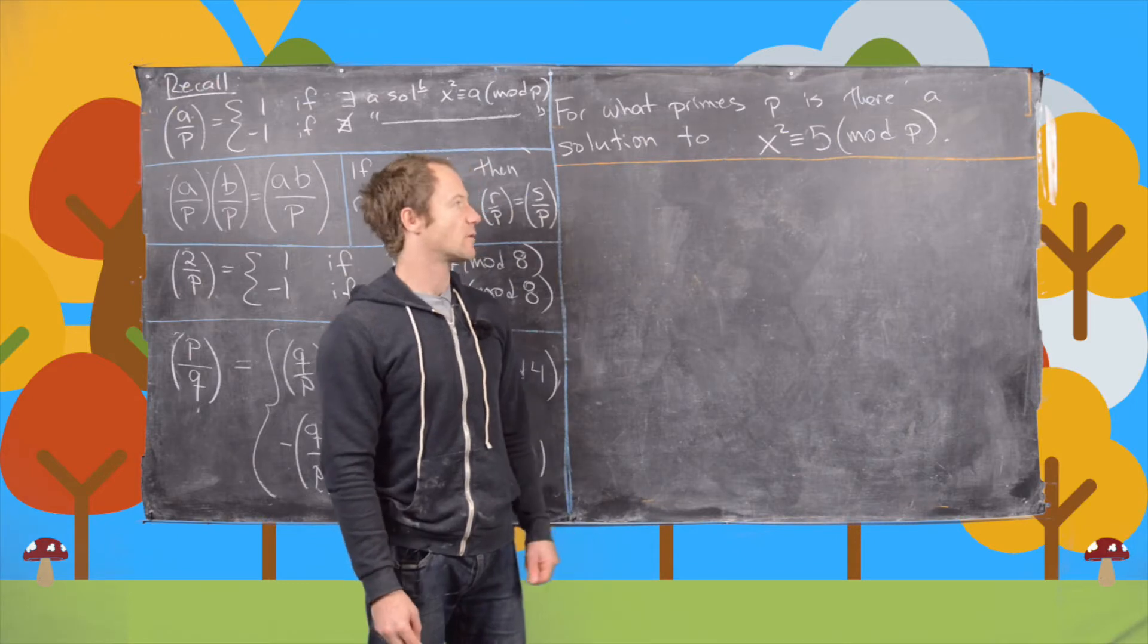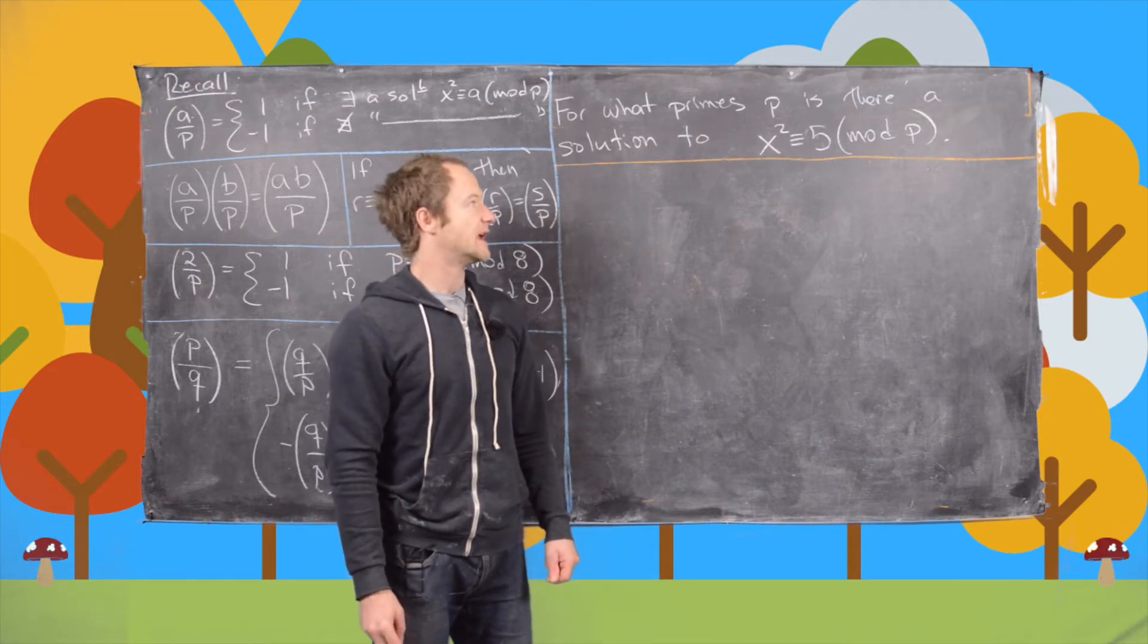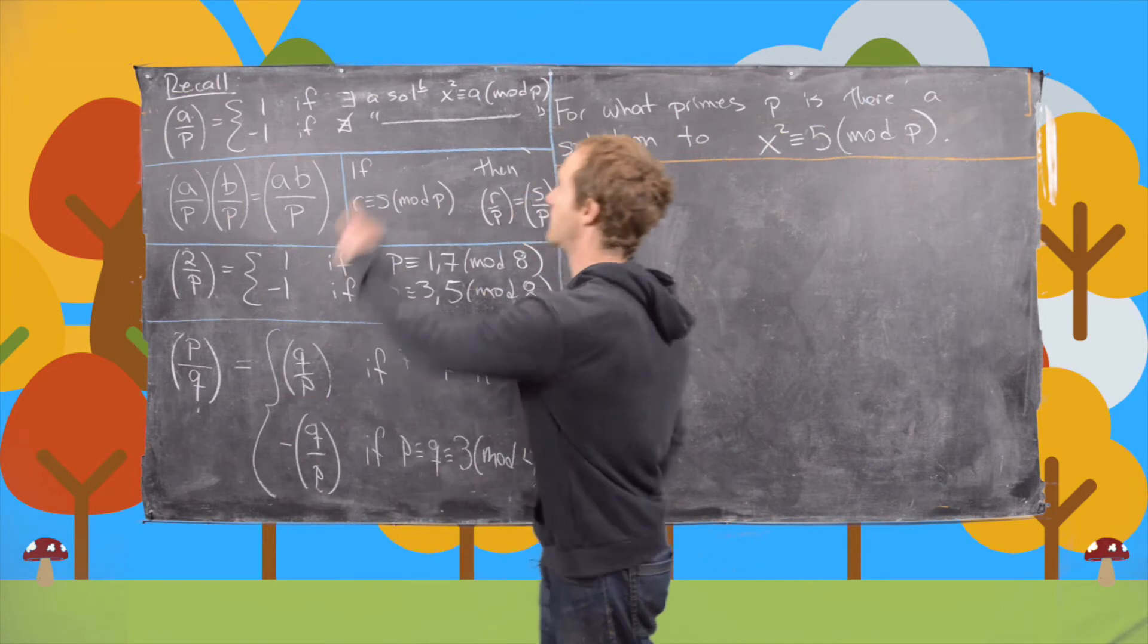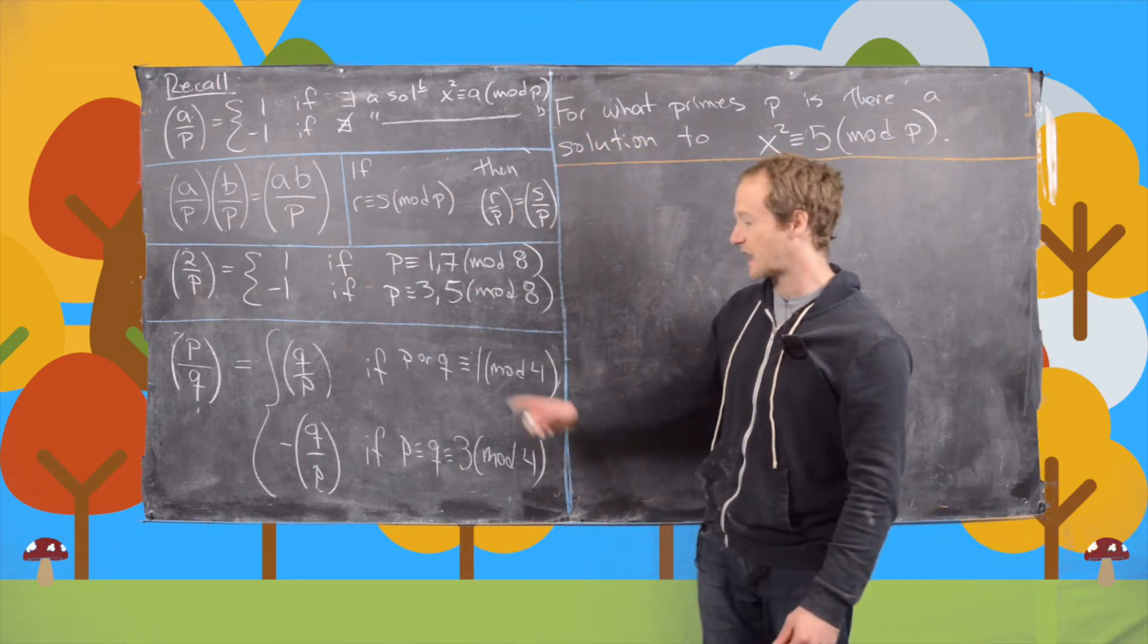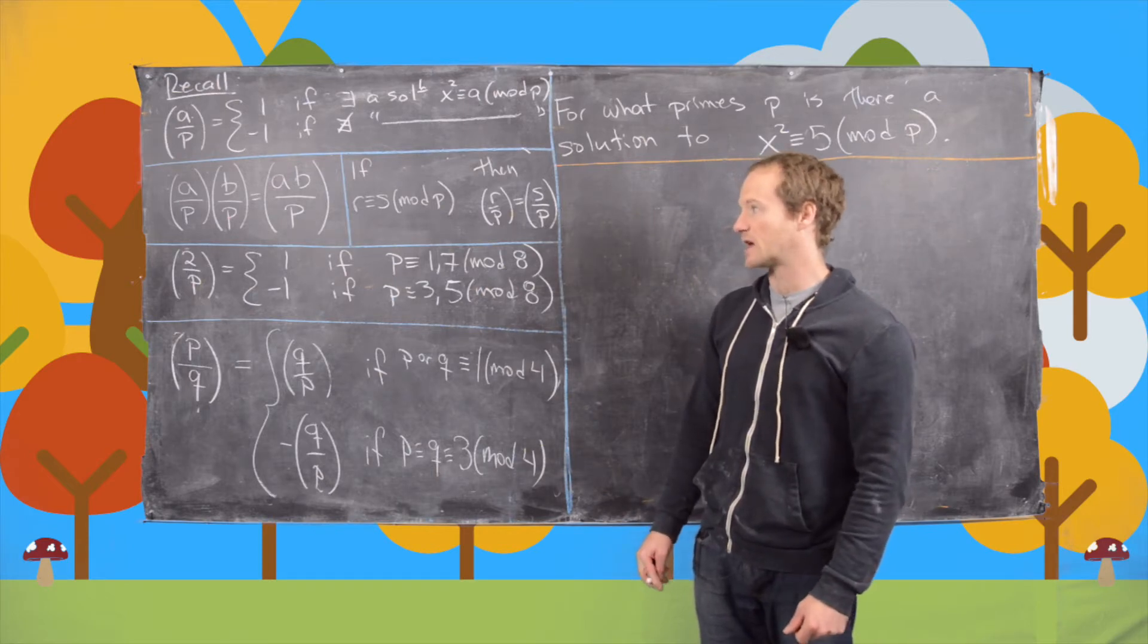In other words, for what primes p is there a square root of 5? We're going to make use of the Legendre symbol and its properties as well as quadratic reciprocity.